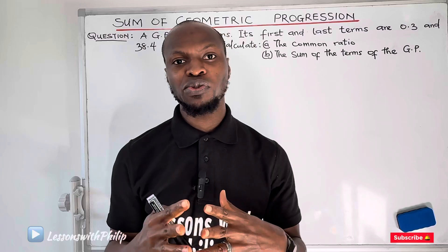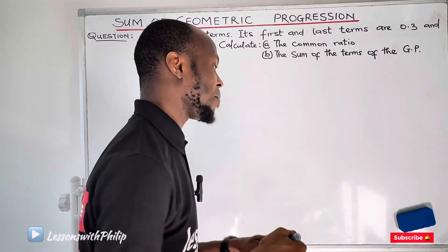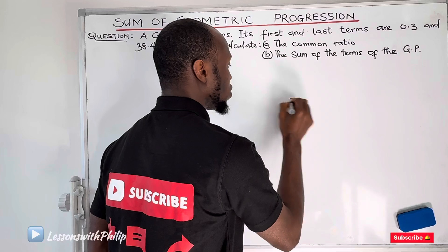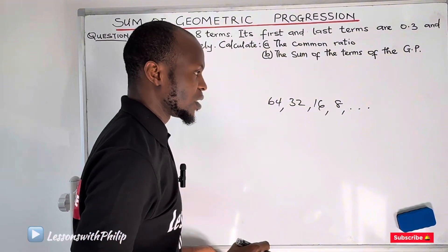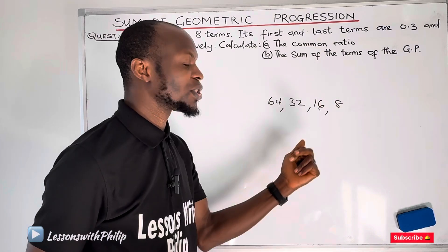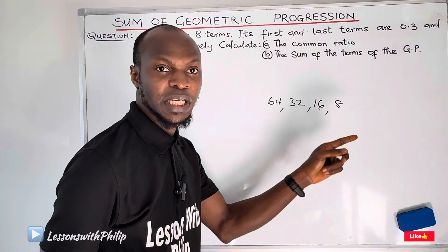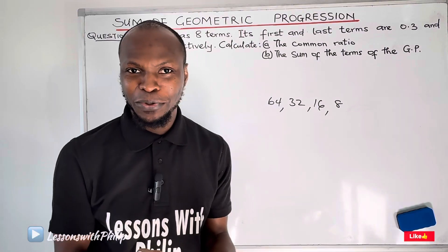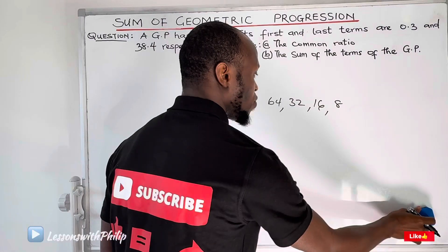We can be asked to sum all the terms in a GP. How can we go about that? For example, if we are given a GP like 64, 32, 16, 8, and so on and so forth — but let's say the GP stopped at this point. If you had to add all the terms in this GP, would you take your calculator and calculate 64 plus 32 plus 16 plus 8? If the sequence is so long, will you be adding one by one? Capital no. There's a formula to use to add all the terms in a GP.